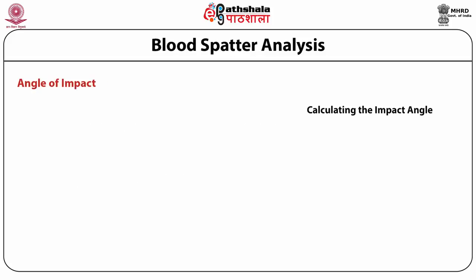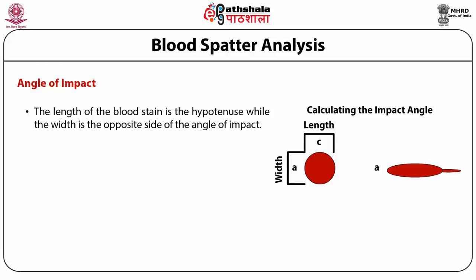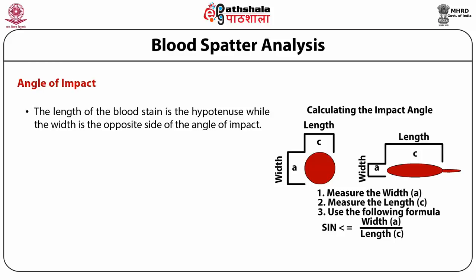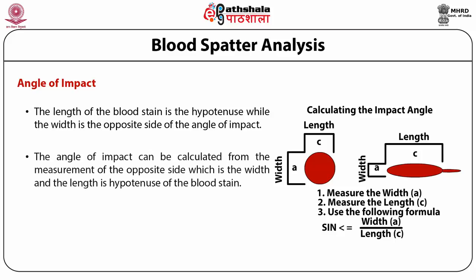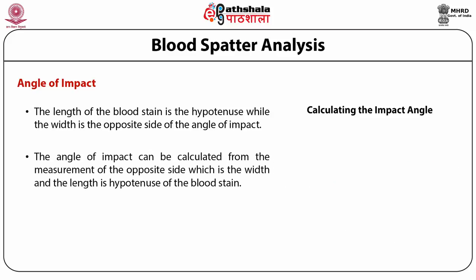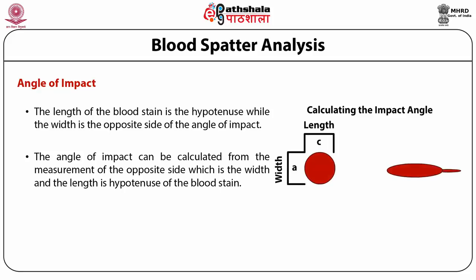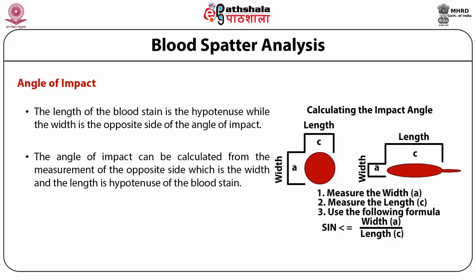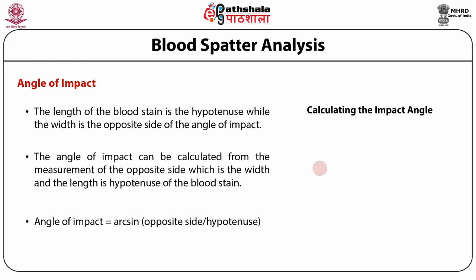The angle of impact can be calculated from the measurement of the blood stain: the length of the blood stain is the hypotenuse while the width is the opposite side of the angle of impact. The angle of impact is equal to arcsin (opposite side divided by hypotenuse), that is, width divided by length.